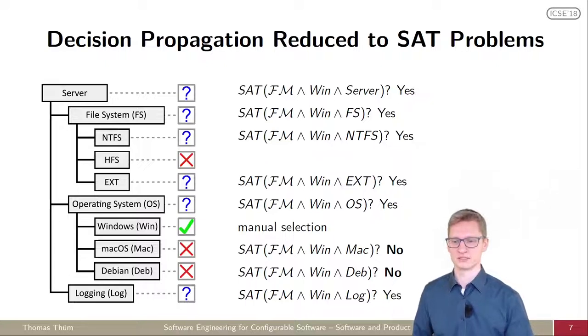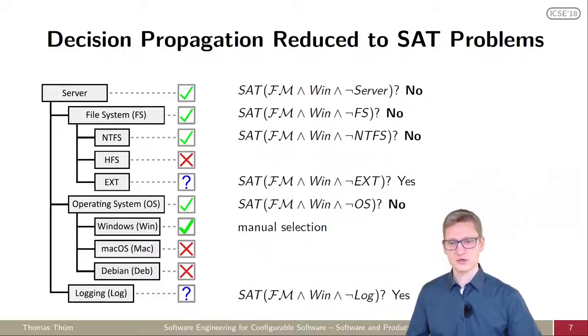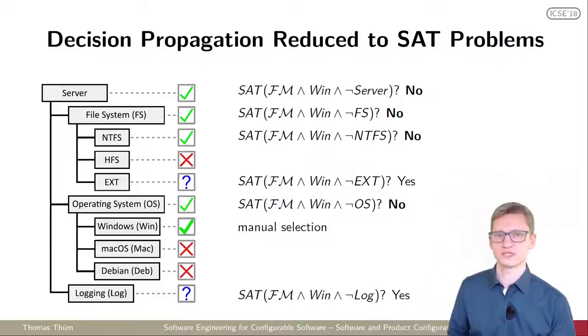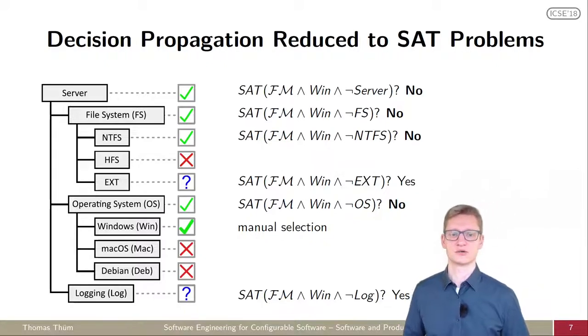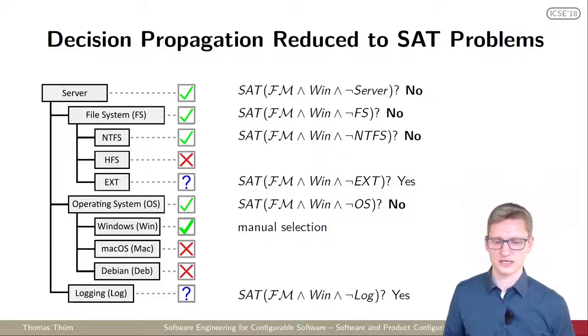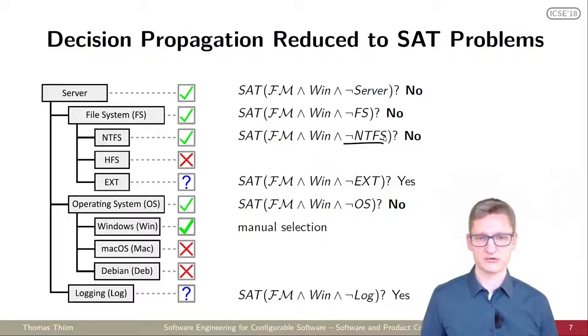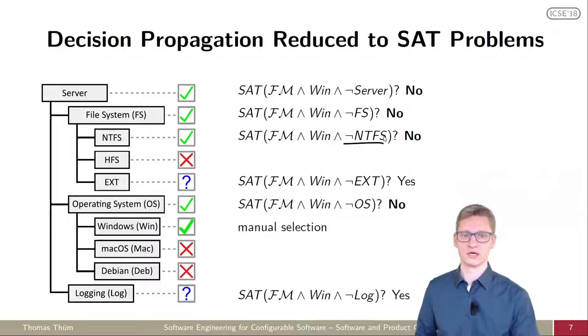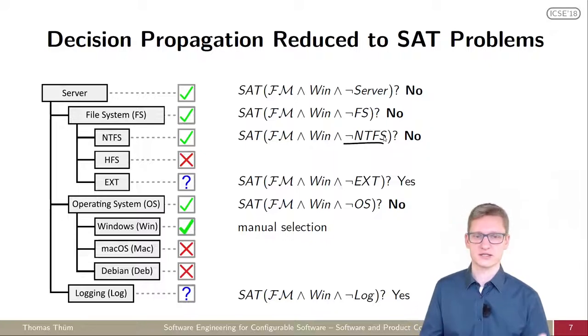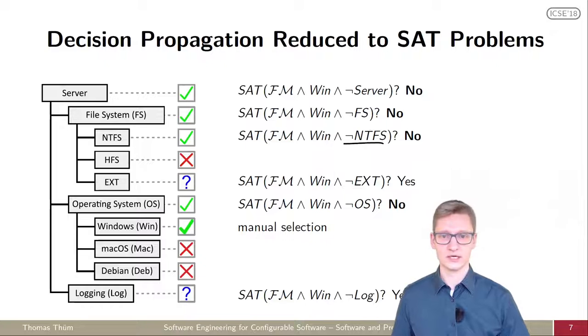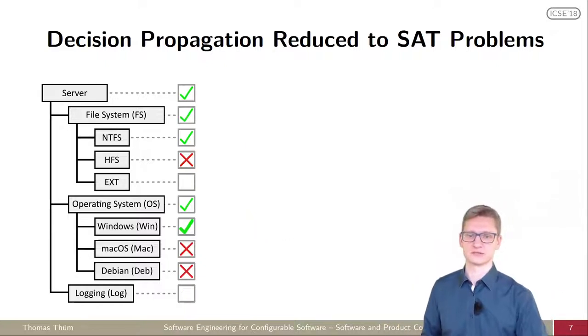We repeat this process for all the different choices here and we find out that we also cannot have Mac OS and Debian in this case. But that's also the other way around. We can also check if it's still feasible to not select the feature. We have the same formulas like before, but this time for this example with NTFS we have the negated variable. If we give this to the SAT solver, it will tell us whether it's still feasible to not select it. If that's not the case, if we get an unsatisfiable result, then we know that this feature must be selected.